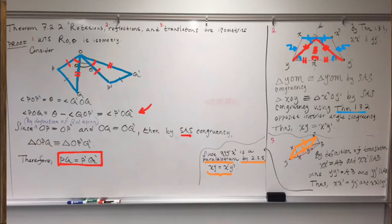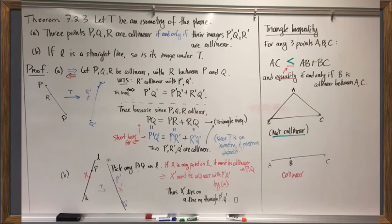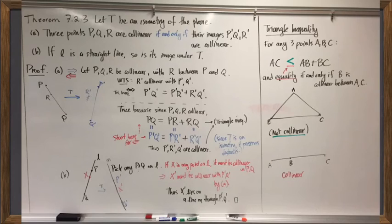A lot of content in that one — definitely worth chewing over, because it gets right to the heart of how we define these various transformations. The last thing we did was work toward the proof that an isometry sends straight lines into straight lines. We first did that by showing that collinearity is preserved.